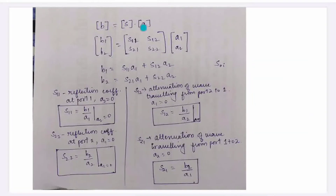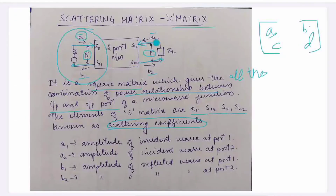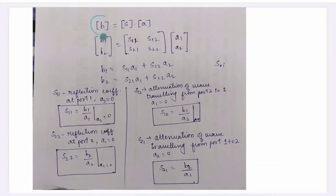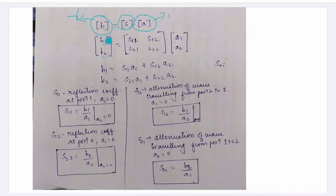Now, a1 and a2 are the amplitude of the incident wave, and b1, b2 are the amplitude of the reflected wave. The equation is: reflected wave equals S-matrix times incident wave. That is, amplitude of reflected waves equals S-matrix times amplitude of incident wave.